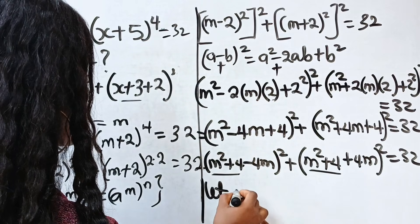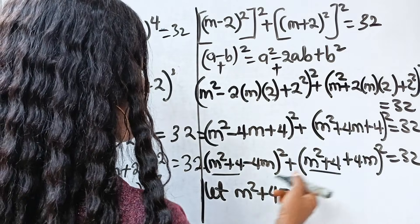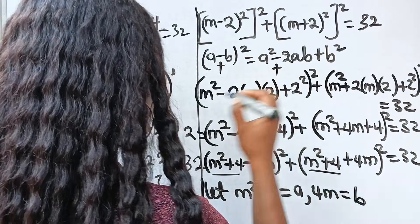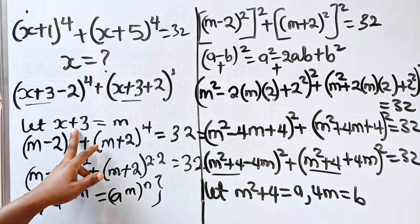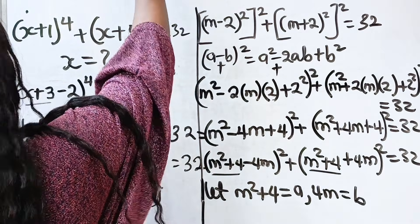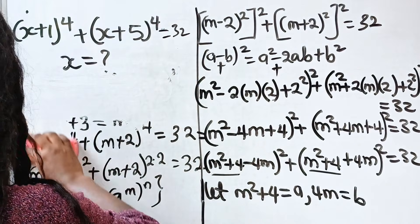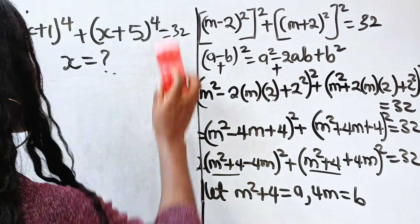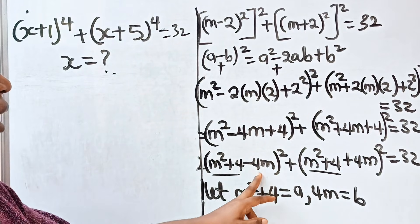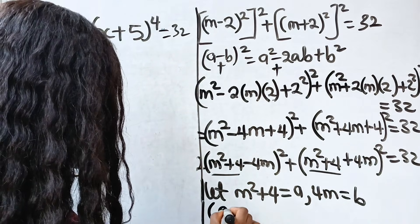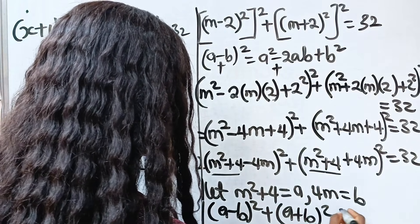We can see that m squared plus 4 appears in both expressions. Let a equal m squared plus 4 and b equal 4m. Then we have (a minus b) squared plus (a plus b) squared equals 32.